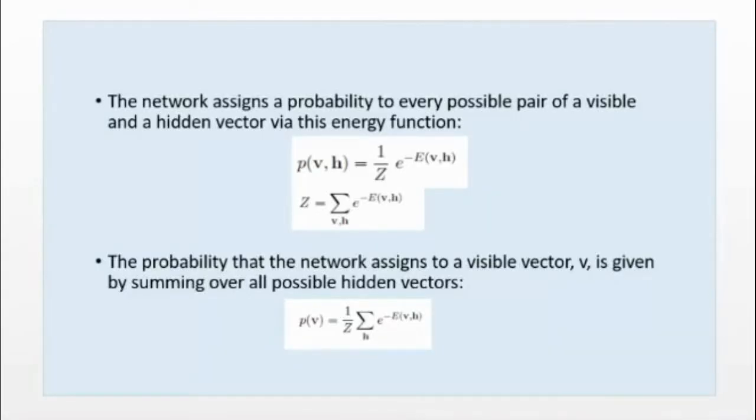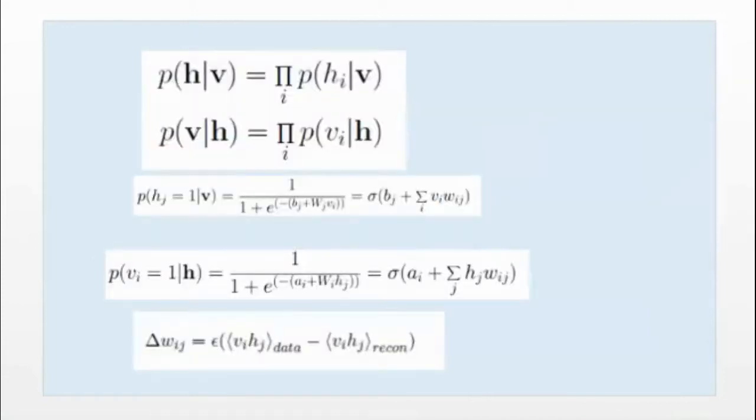So here the probability that a network assigns to a visible vector V is given by this formula. But to calculate this, since we have two things, we are using conditional independence. After that is a Markov random field, so there is conditional independence. The probability of H given V is given by this product over I probability of HI given V, and the probability of V given H - the same formula, but the role of V and H are interchanged.